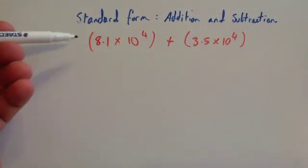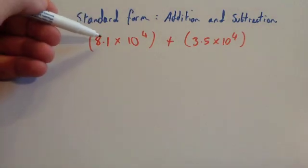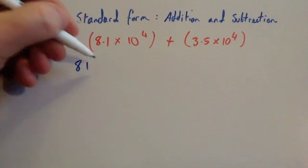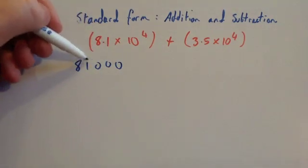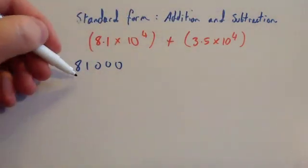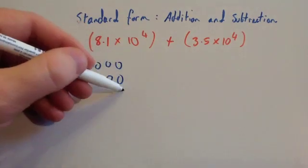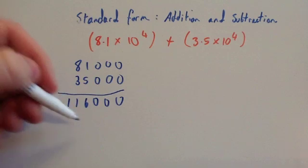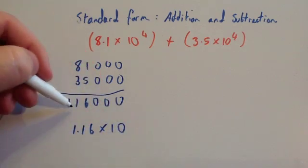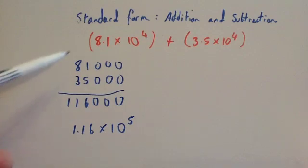Now let's look at what happens if the powers are exactly the same. We've got 8.1 times 10 to the 4 plus 3.5 times 10 to the 4. Notice the powers of 10 are exactly the same. You can write them out in full: 8.1 times 10 to the 4 is 81,000 and 3.5 times 10 to the 4 is 35,000. Adding them together gives 116,000, which is 1.16 times 10 to the power of 5.